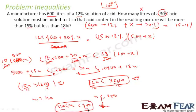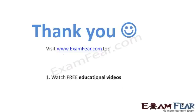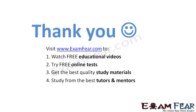So the solution is x is greater than 120 and less than 300. Whatever amount is added should be greater than 120 liters and less than 300 liters. To recap: we had 600 liters of 12% solution and added x liters of 30% solution to get a final concentration of 15 to 18%. We formed two inequalities and solved them to get the answer. Thank you — visit examfear.com to watch free educational videos, try free online tests, get the best quality study material, and much more.